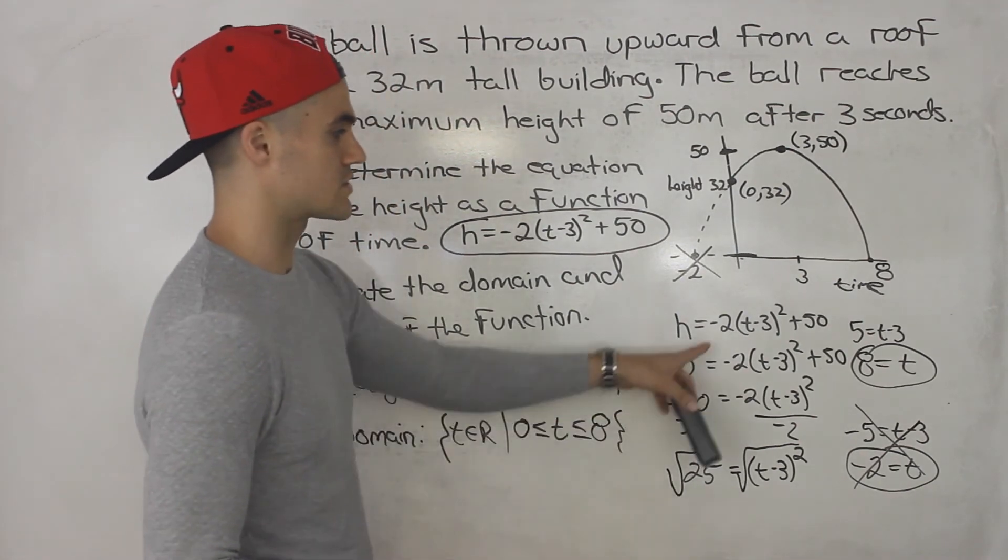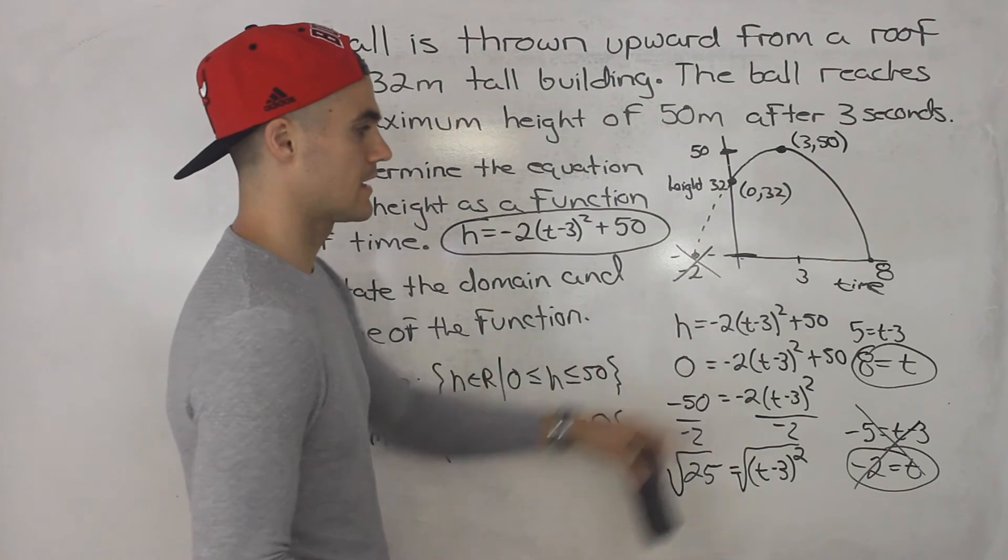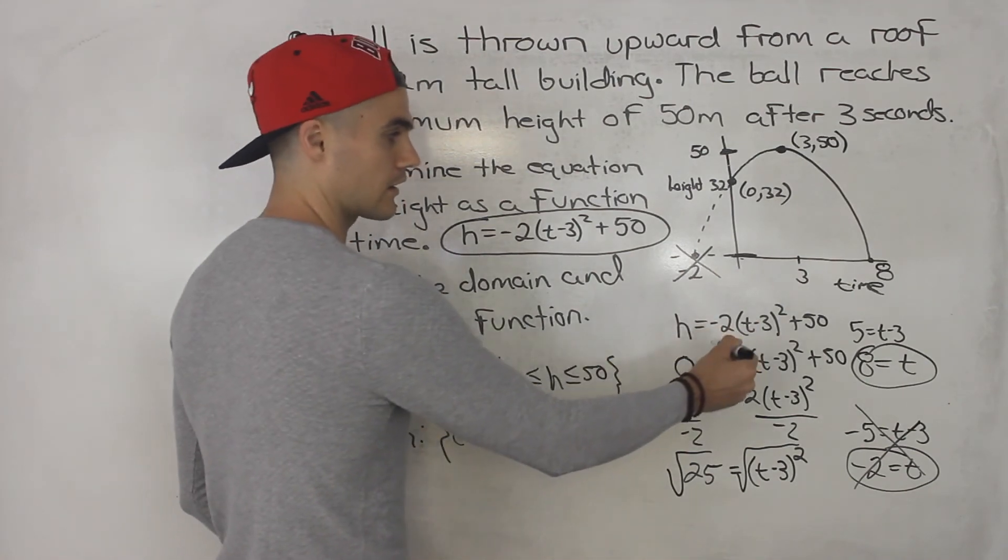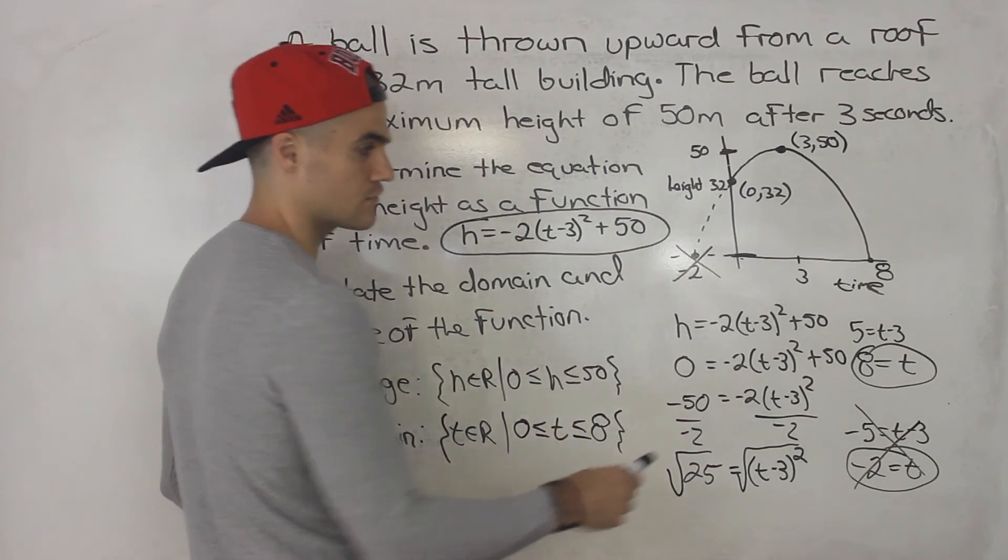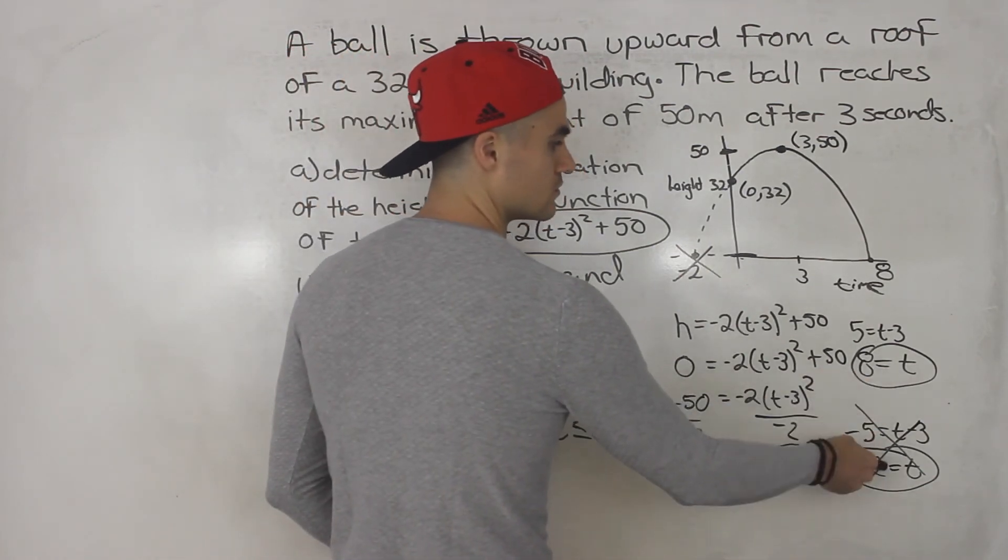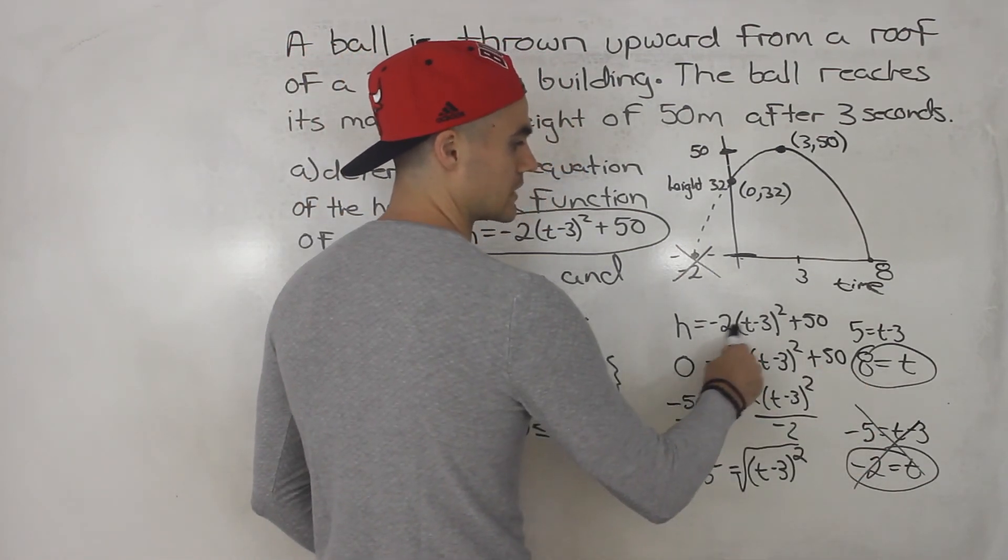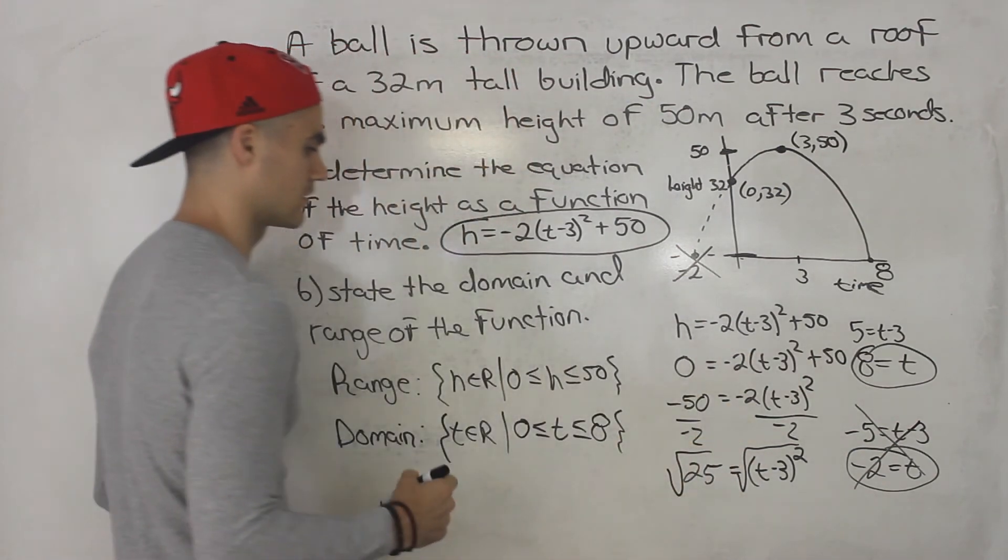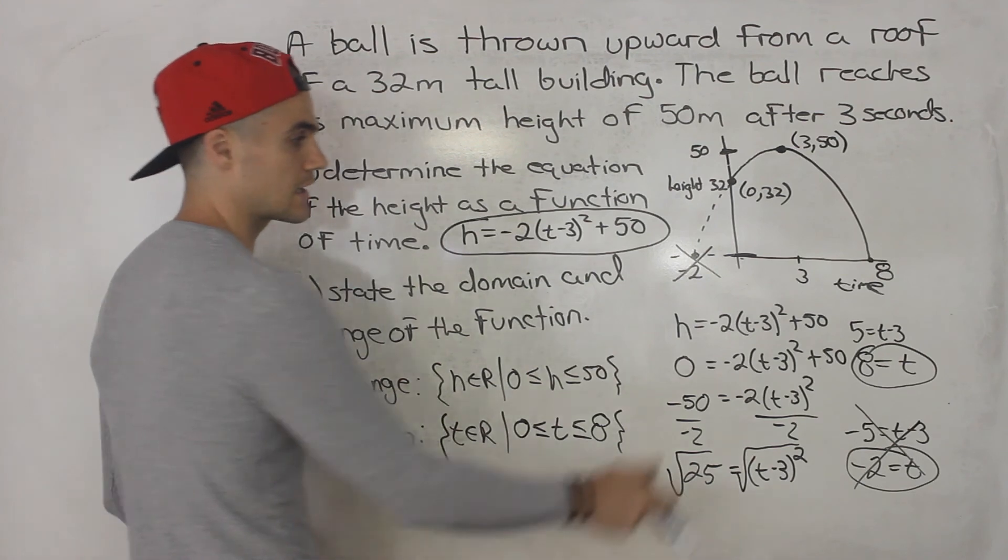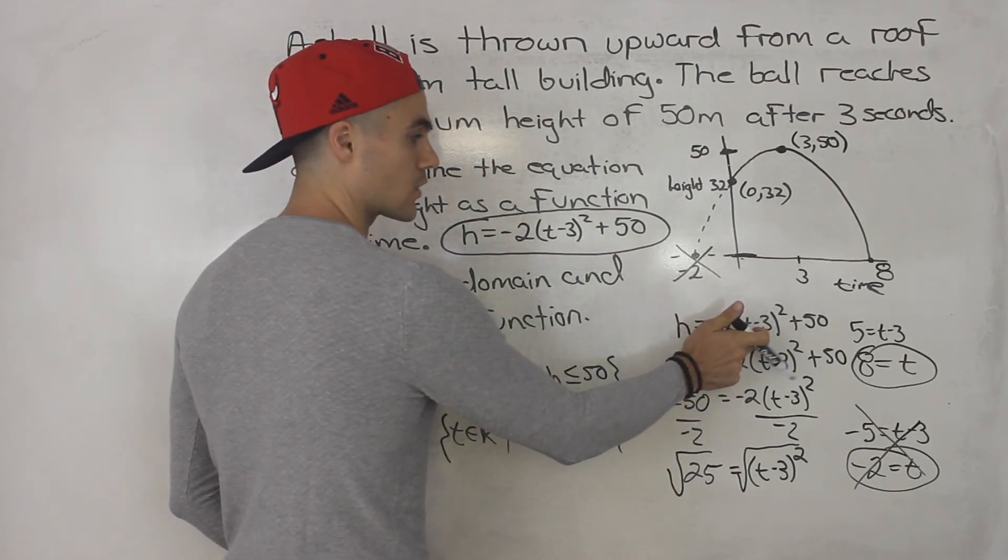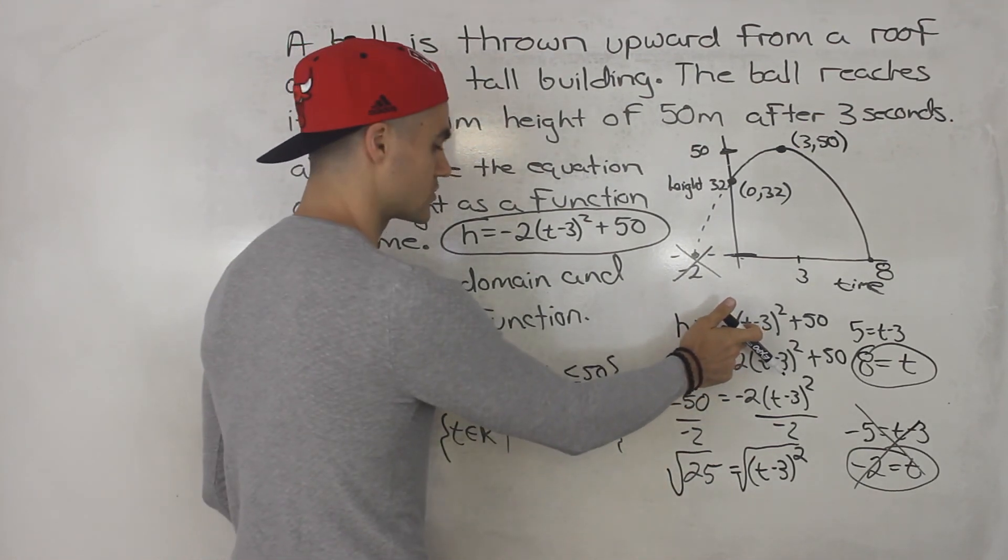And again, another way that you could solve for t is you could expand everything and then throw it in the quadratic formula. You could actually try that yourself. You should get these two t values if you expand it correctly and simplify correctly. But nevertheless, this is another way to solve for t if the quadratic is given in vertex form.